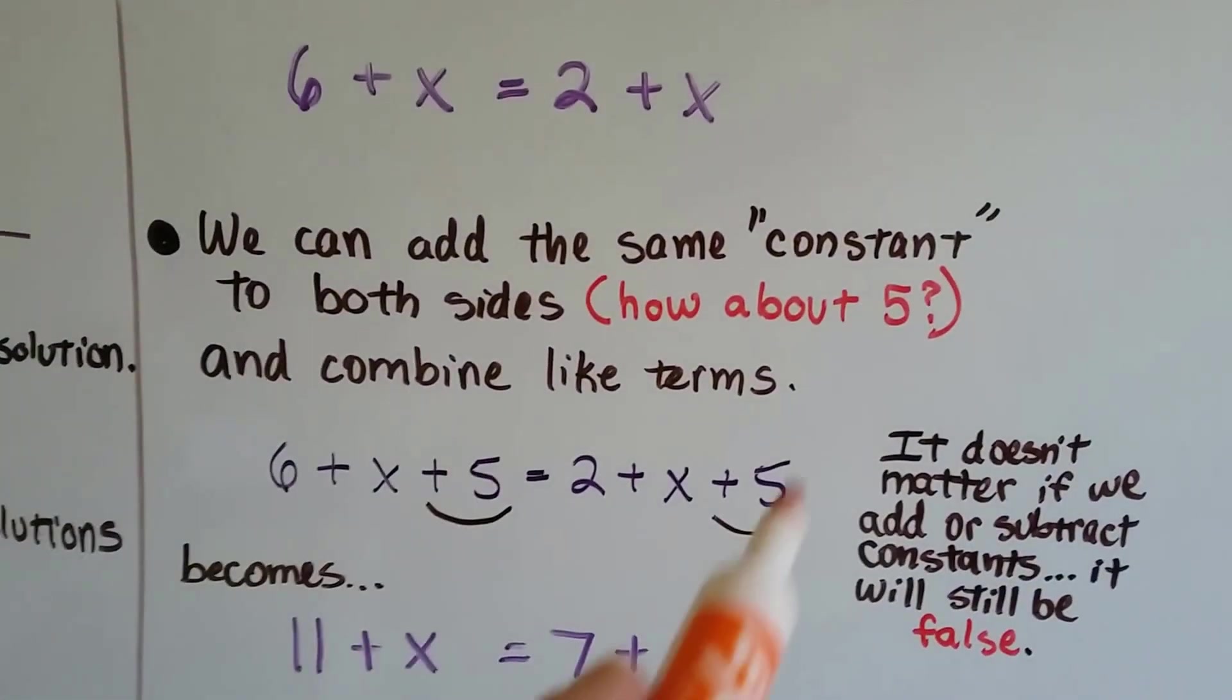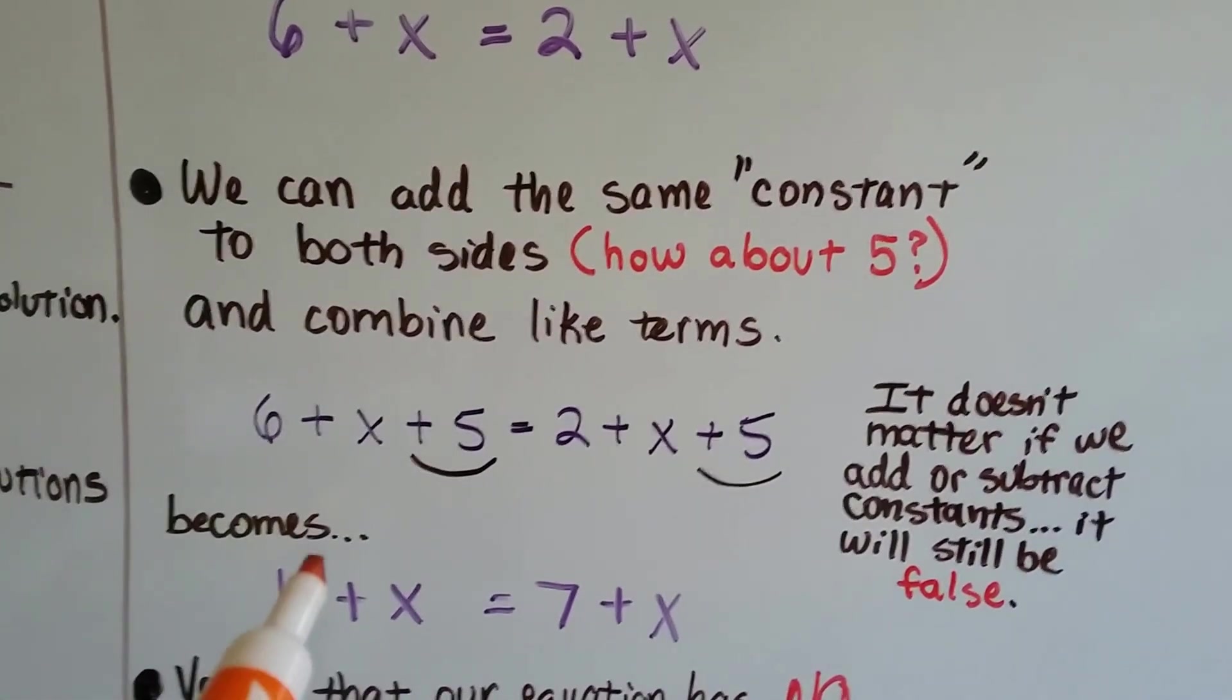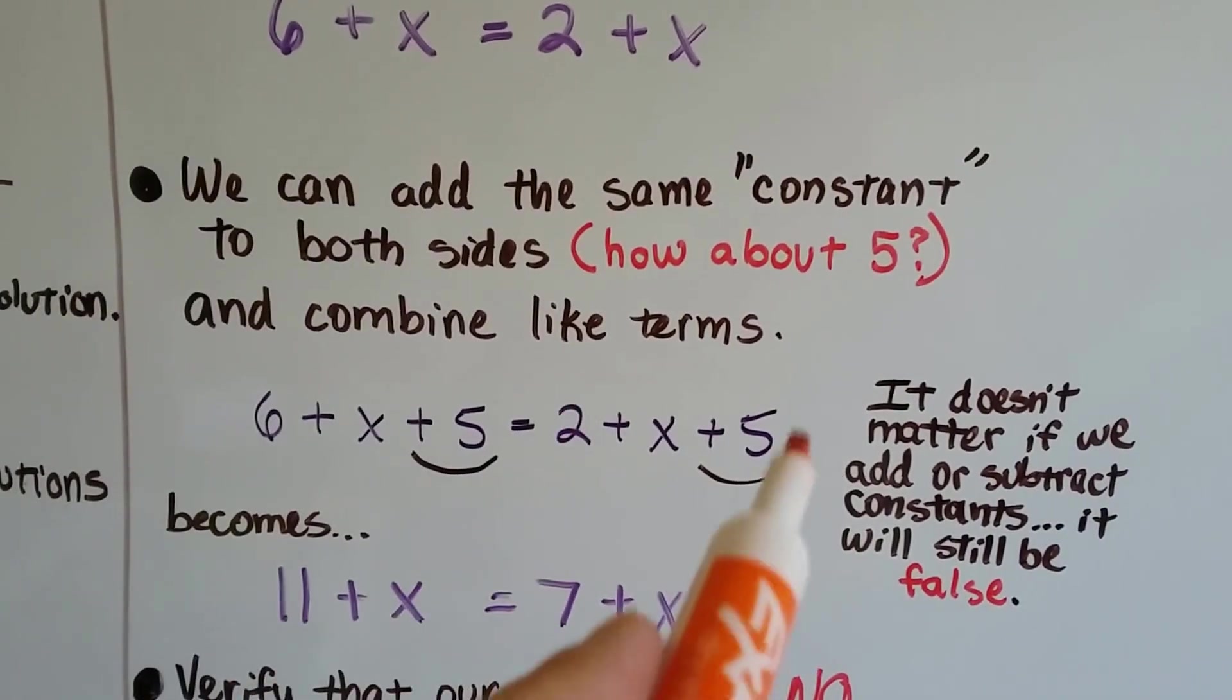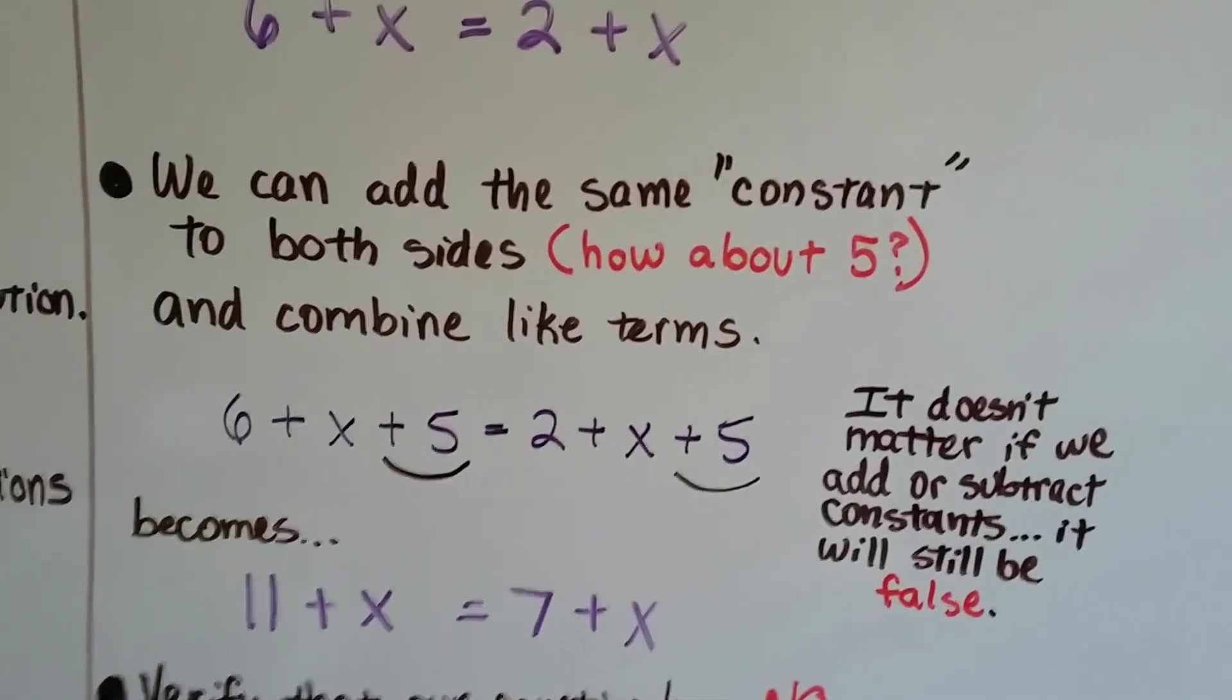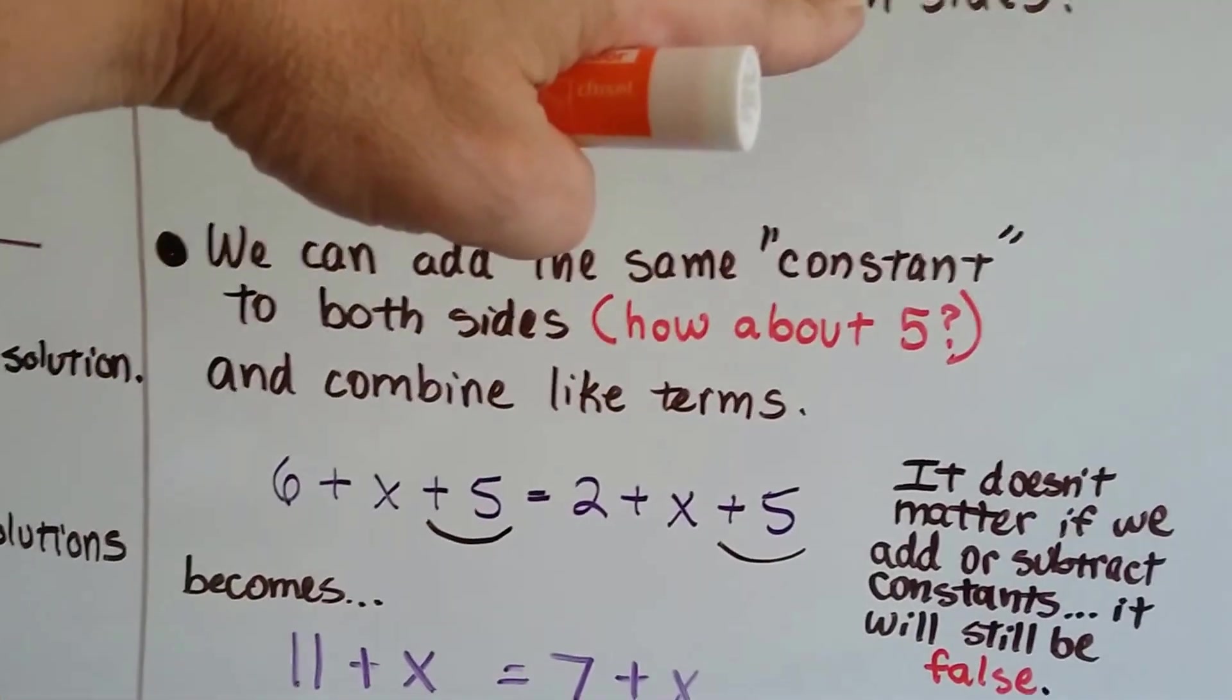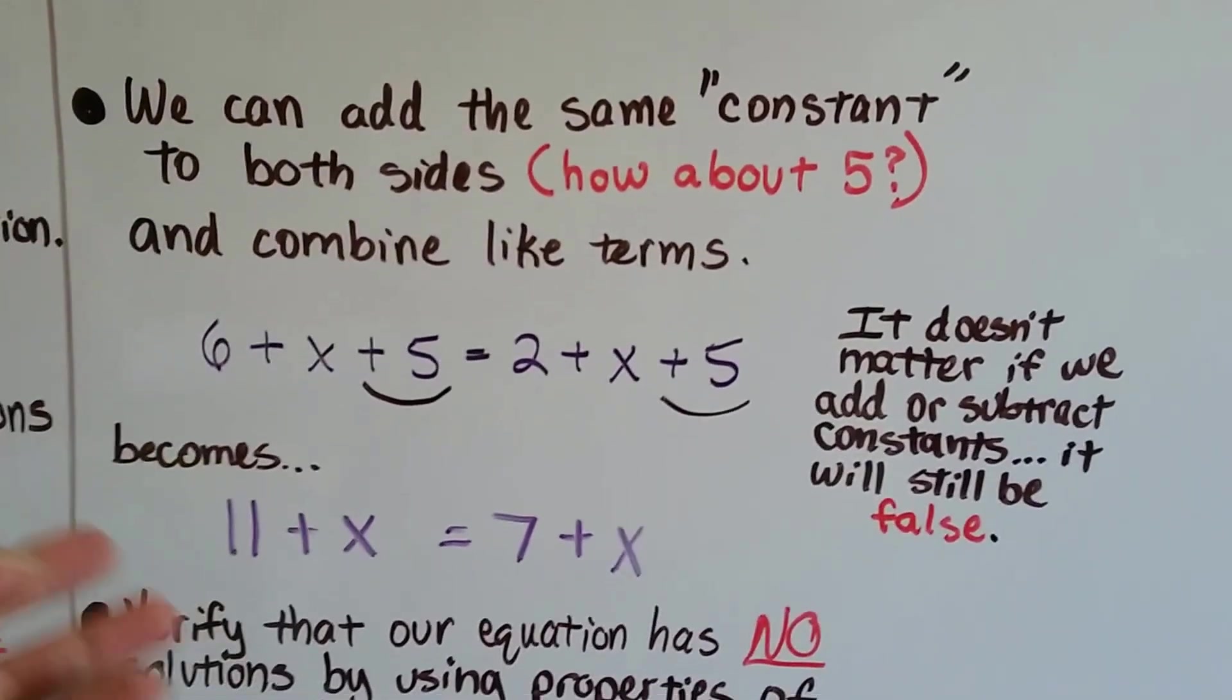Let's add a 5. So we add 5 to both sides and then we put the like terms together. 6 plus 5 is 11, now I get 11 plus x. And 2 plus 5 is 7, now I get 7 plus x. All we did was we have the exact same equation just raised by a plus 5. It's the same thing as this one. We didn't change anything. It's still false.